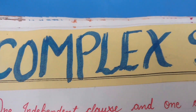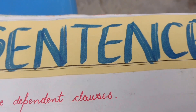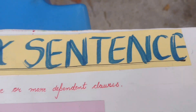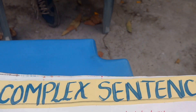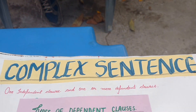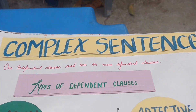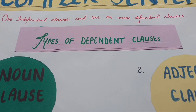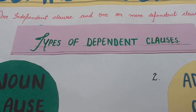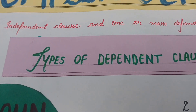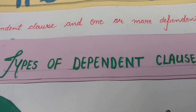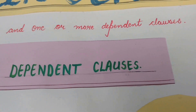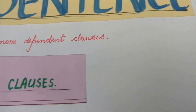Let's take an example: 'I will buy it, cost what it may.' In this, 'I will buy it' is the main clause, and 'cost what it may' is a dependent clause depending on the main clause, that is, 'I will buy it.'